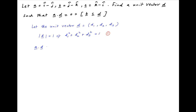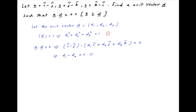We are given that the dot product of vectors a and d is equal to 0. Therefore, vector i minus j, dot d1·i plus d2·j plus d3·k, is equal to 0. This implies that d1 minus d2 = 0, which implies that d1 = d2. Let's call this result 2.